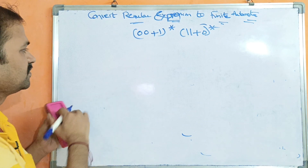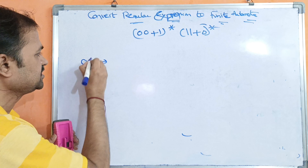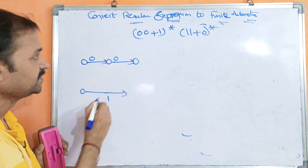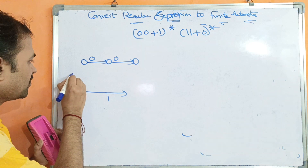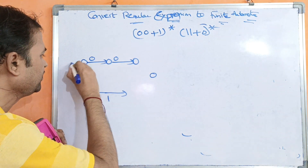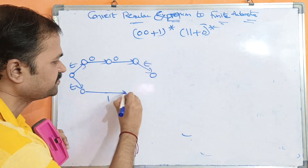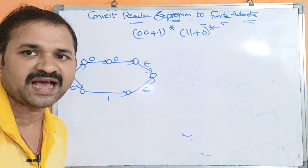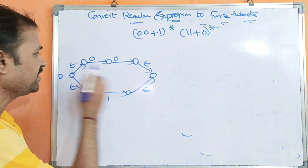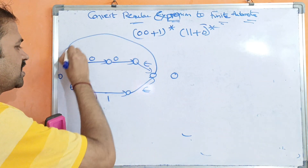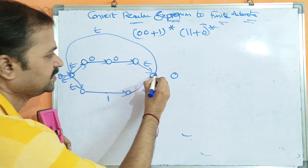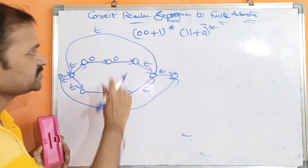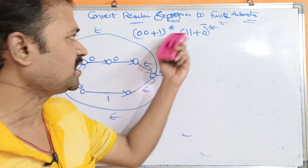On the upper side we write 00 — this is the first 0 and this is the second 0. For representing 1, we add states. For 00 plus 1, we require two more states and apply epsilon transitions. Next, for (00 plus 1) whole star, we require two more states, apply epsilon to move between states and loop back, completing (00 plus 1) star.